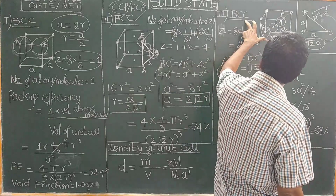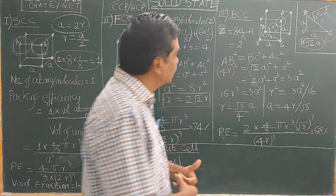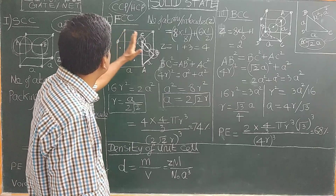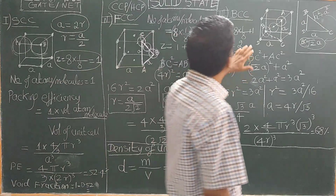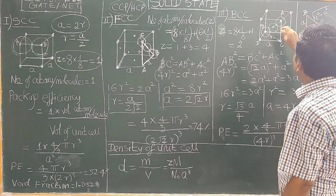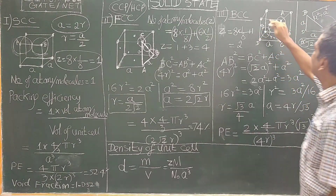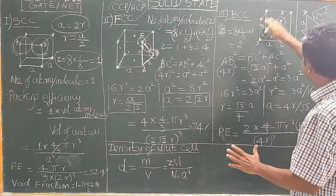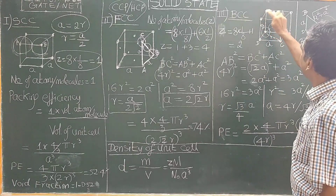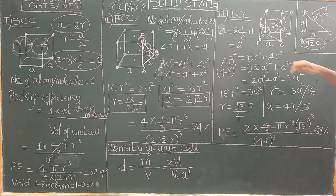Let us now come to body-centered cubic lattice. Cesium chloride is a good example of BCC, while sodium chloride is a good example of face-centered cubic lattice. In the body-centered cubic lattice, there are atoms at the body-center and at the corners of the cube.